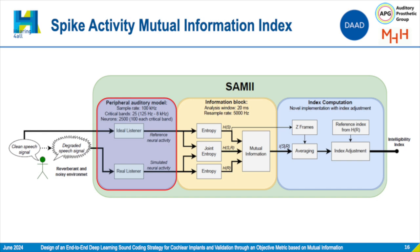SAMI consists of mainly three stages. The peripheral auditory model is based on a state-of-the-art neuron population model that can be acoustically stimulated. The audio signal is resampled at 100 kHz, then 25 critical bands covering the speech frequency range between 125 Hz and 8 kHz are defined. Each critical band contains 100 neurons, giving a total of 2500 neurons. Parameters on these neurons have been randomized to cover their full behavioral spectrum. The output of these neurons will be the SPAC activity, which counts the amount of action potentials occurring every time step for every critical band.